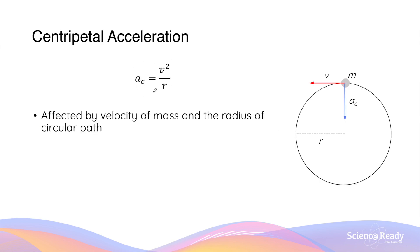The equation for centripetal acceleration is v squared over r, where r is the radius of the circular motion. This equation is useful because the magnitude of the acceleration is affected by two things: the object's velocity and the radius of circular motion. If the object is travelling faster, the acceleration needed will be greater. If the radius is bigger, the centripetal acceleration will be smaller, because the two variables are inversely proportional.